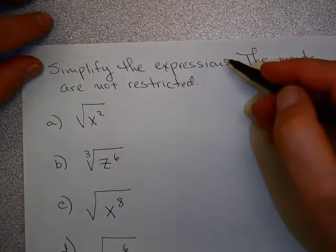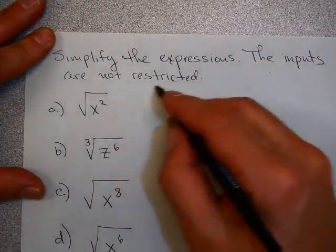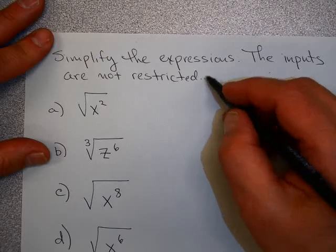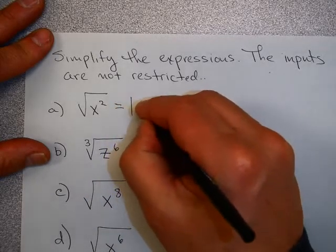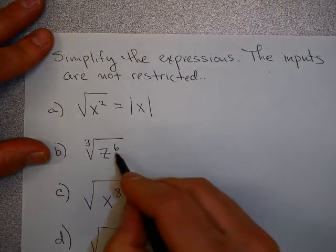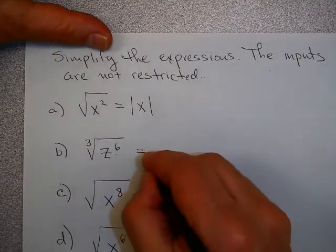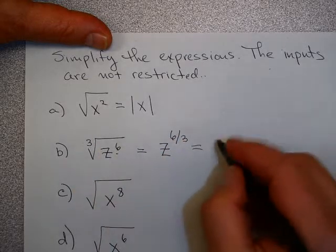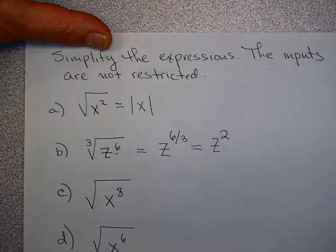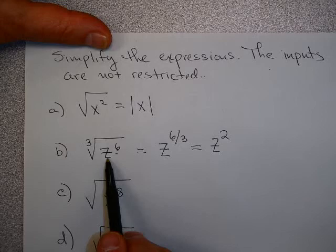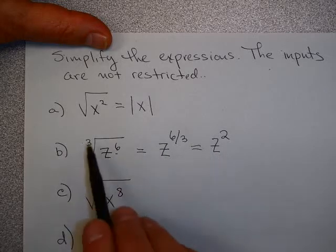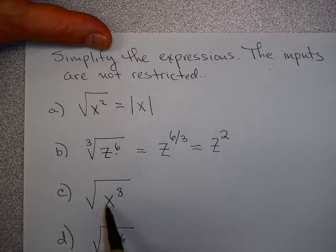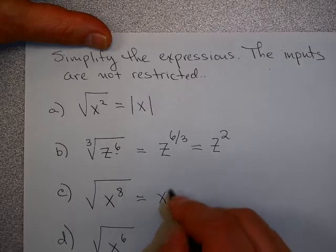But you have to be careful. Let me show you what I mean. We're going to do some problems here. I want you to simplify the expressions. The inputs are not restricted. If that instruction is given, it means watch out for absolute value. We already talked about how the square root of x squared is the absolute value of x. The cube root of z to the 6. If you think about this, this is z to 6 over 3, which is z squared. Now z to the 6 is always going to be a positive number, so is z squared. Cube root is defined for everything, so I don't need absolute value here.